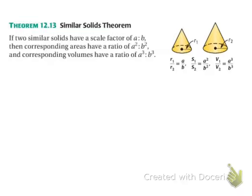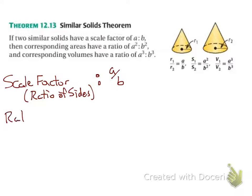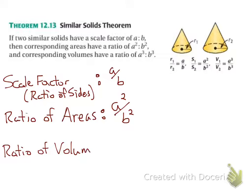So, the similar solids theorem. We start with if two similar solids have the scale factor of AB. So we say scale factor, or it's also called the ratio of the sides. So either one, we call that A over B. And then we have the ratio of the areas. And this is what we looked at in the previous chapter, which you can go back and watch, and that was A squared over B squared. So we actually squared the scale factor to get to that. New one is the ratio of the volumes. And this is going to be A to the third, B to the third. So now we're actually going to cube the scale factor to get to the ratio of the volumes.